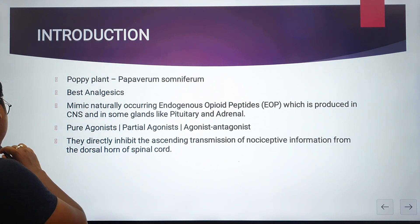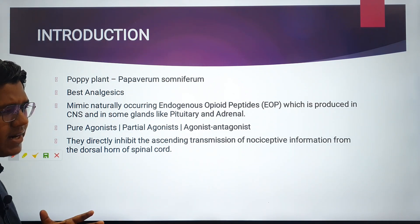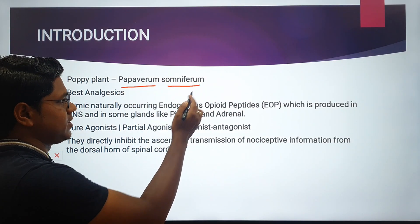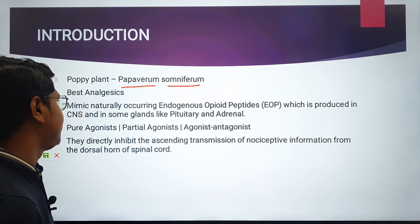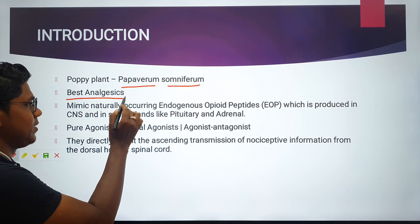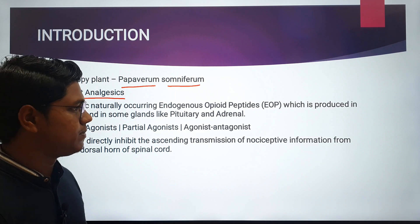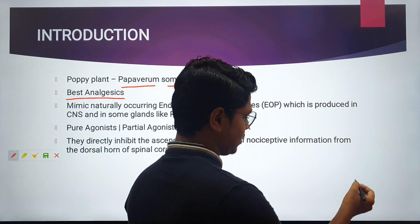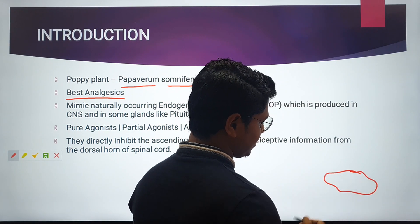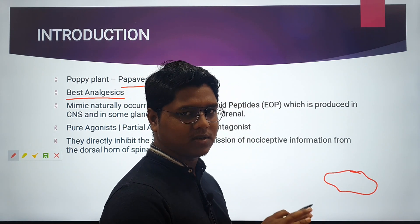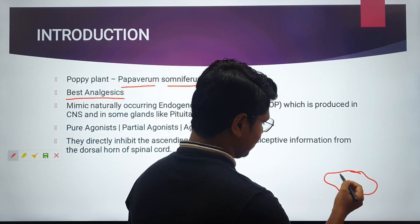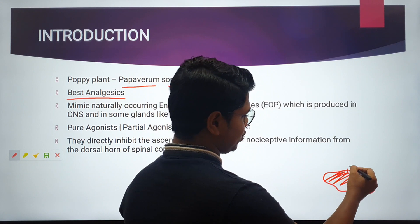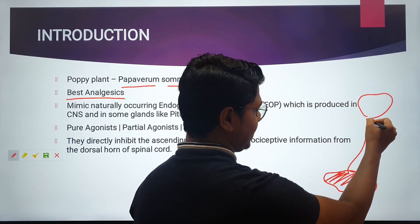Introduction to opioids: they are derived from the poppy plant, Papaver somniferum. They are the best analgesics because they cut down the pain pathway. There are two ways to reduce pain: you can reduce the inflammation, or you can cut down the pathway. Pain is usually associated with inflammation, which is perceived by the brain through nerve endings.